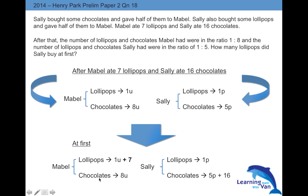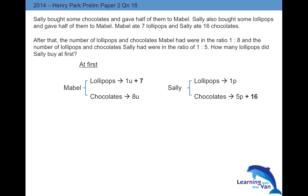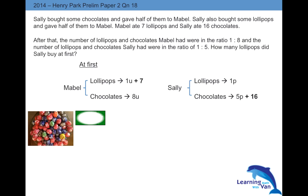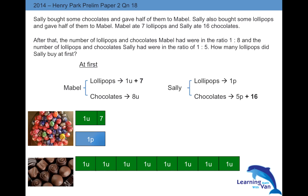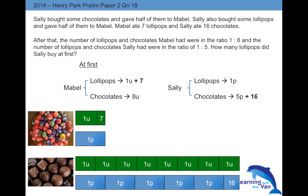So you can see there are 4 expressions here. What we discussed earlier is that the number of lollipops is the same and the number of chocolates is the same. Using the model, this is how it looks. Can you see the relationship now? 1 part is equivalent to 1 unit plus 7. In terms of chocolates, one side is 8 units and the other is 5 parts plus 16. You see that?